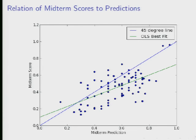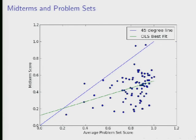If we look at the average problem set score person by person and use that to predict performance on the midterm, we also get a significant positive relationship. Poor performance on problem sets is a more reliable predictor of poor midterm performance than high problem set scores predict good midterm performance. The message is that investment on the problem sets — working through them with your group, making sure you understand the material — tends to yield a payoff on the exams.